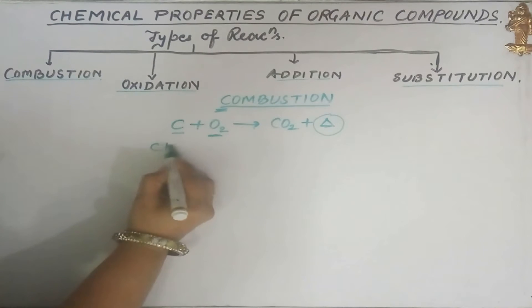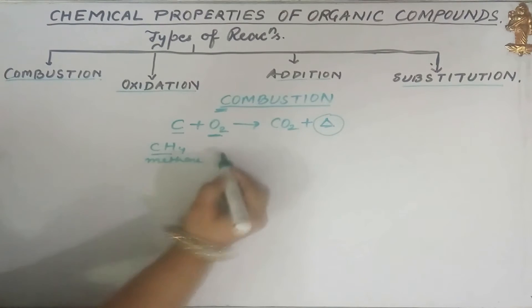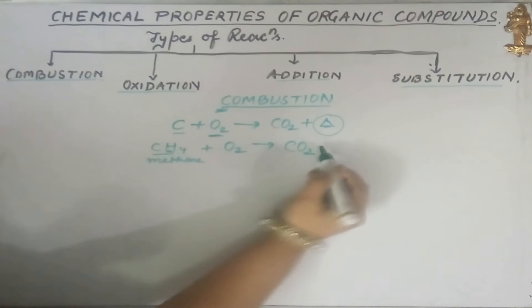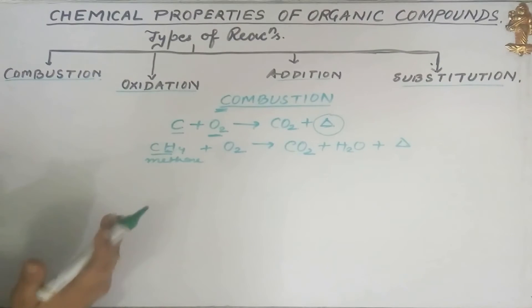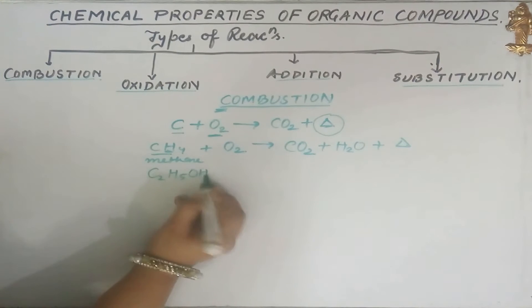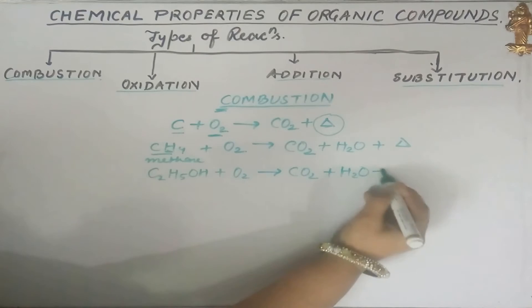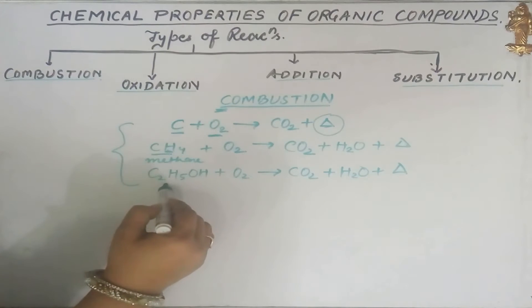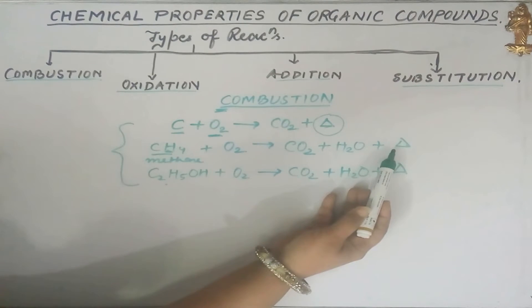Not only carbon, but carbon compounds like hydrocarbons — for example methane — also burn in air or oxygen to give out carbon dioxide and water, along with a huge amount of energy. Other compounds like alcohol (C2H5OH) also burn in the presence of oxygen to give out carbon dioxide and water along with a lot of energy. In summary, carbon and all its compounds burn in air to give carbon dioxide, water, and energy.